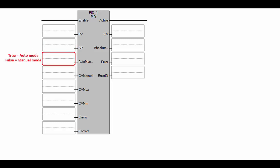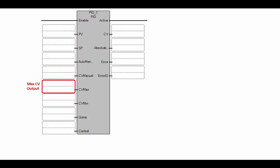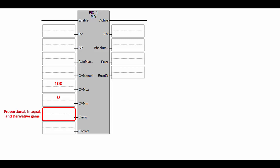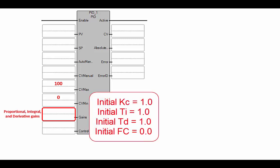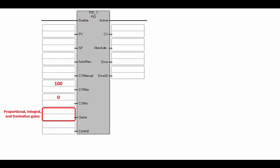The PID also has an input to specify whether it's in automatic or manual mode. In automatic mode, the control variable is calculated automatically based on the process variable, set point, and gains. The control variable needs a maximum and minimum bound set. Because we're using this PID with the auto-tuning instruction, we need the maximum CV output to be 100 — meaning 100% — and the minimum to be 0. The gains are the proportional, integral, and derivative gains, and we'll set initial values to 1 for proportional, 1 for integral, 1 for derivative, and 0 for the filter gain. These will then be updated based on the auto-tuning output.